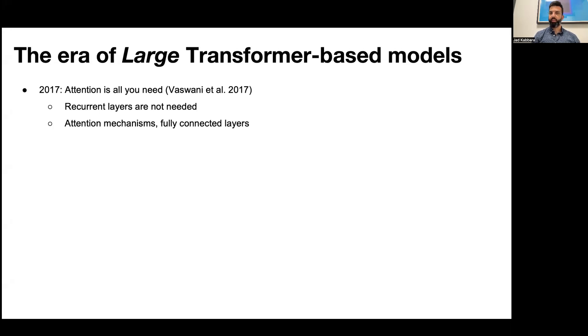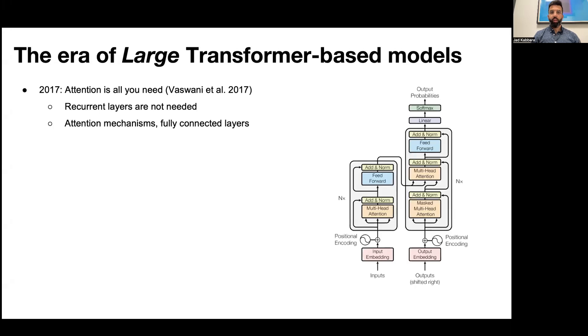Instead they relied entirely on an attention mechanism to draw global dependencies between the input and the output. The paper presents a model called transformer which uses stacked self-attention and pointwise fully connected layers for both the encoder and the decoder. We can see here highlighted in the red box one of the attention blocks.